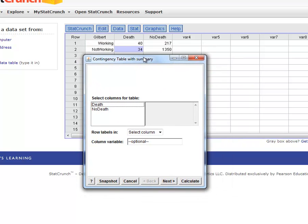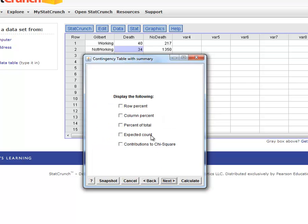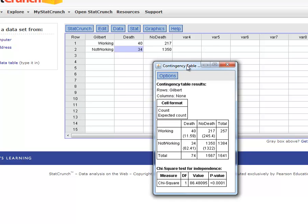Alright. And then it's pretty self-explanatory. The columns would be the column variable which is death. So death and no death because those are the two options. And then the next says Row Labels. And that Row Labels is in this column here that's labeled Gilbert. And so I just do Gilbert. And that's basically all there is to it. The first question, I want to get the expected values. And so if I hit next and check the expected count, those will give me the expected values. So I don't actually have to calculate them by hand.